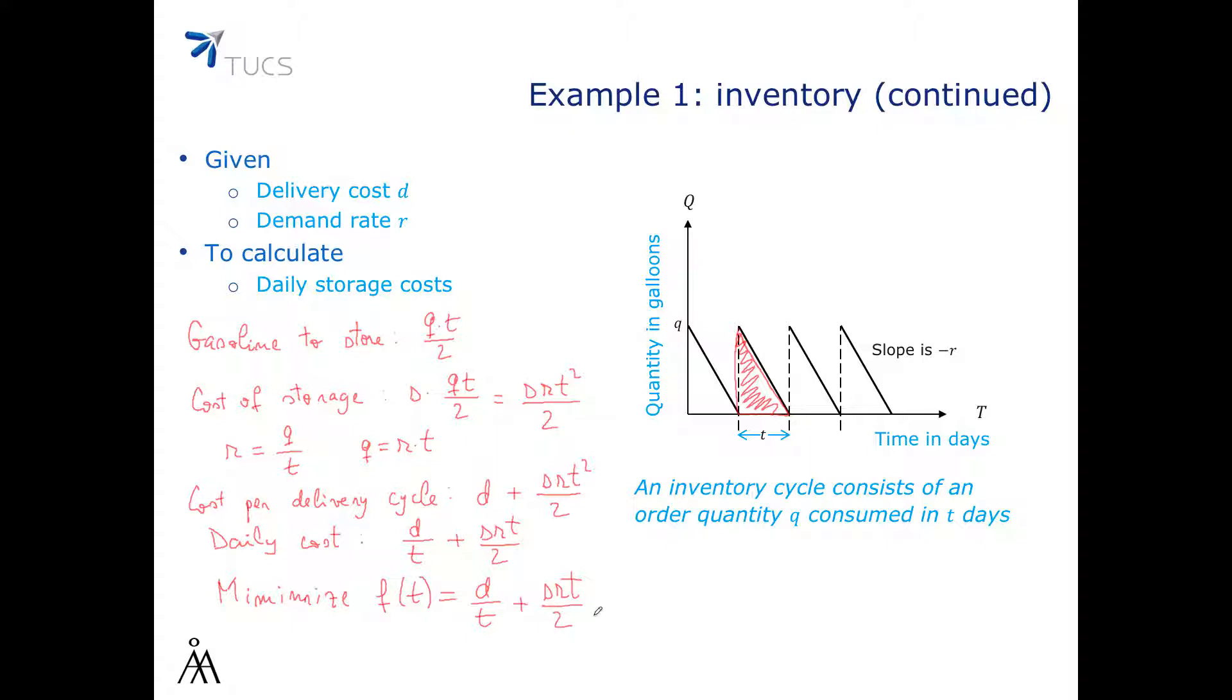Our approach is, as we have already seen in previous videos, to look at the zeros of the differential of F. So we are going to have to solve the equation dF/dT = 0. And when we calculate the differential here, we get that this is minus D over T squared plus SR over 2 equals to 0. So that will give us the solution T equals square root of 2D divided by SR.